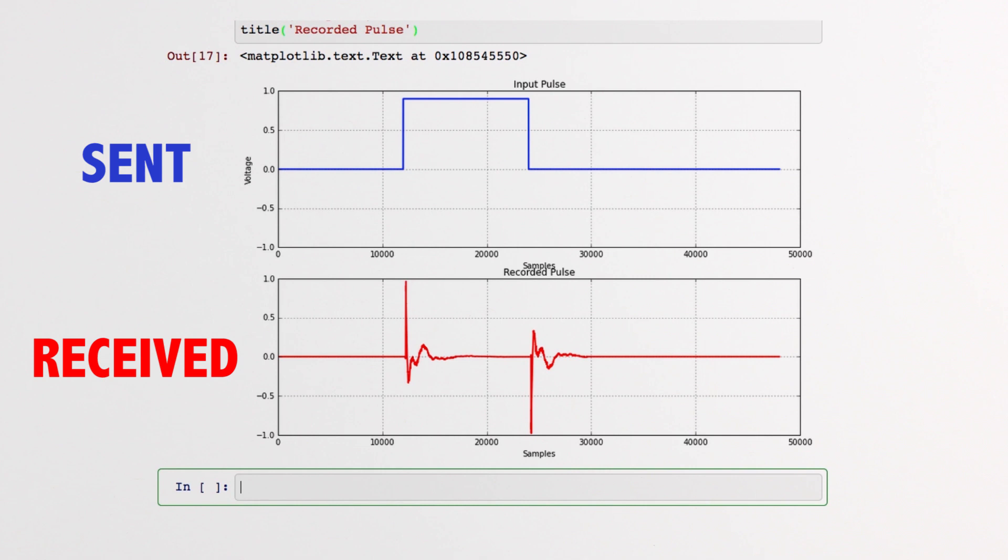Let's see here. So what's going on? We sent a nice clean pulse to our speaker, but the signal our microphone recorded looks totally different. Why would this be?